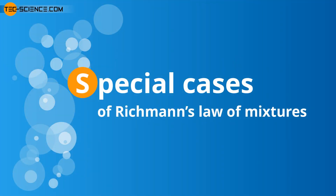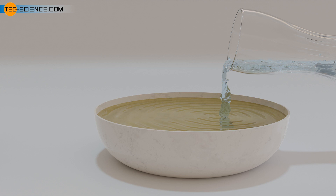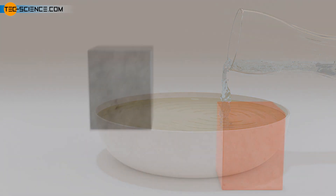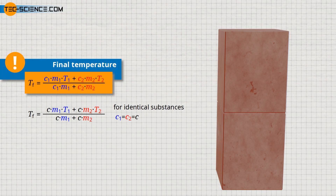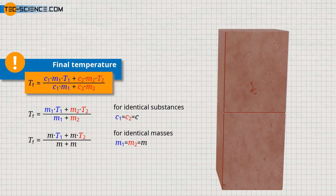Special Cases of Richmond's Law of Mixtures. When mixing two identical substances — for example, when pouring hot water into a cold water bath, or when bringing two steel blocks together — the specific heat capacities are identical, so that the final temperature is ultimately independent of these specific heat capacities and they can be cancelled out in the formula. That means, no matter which substances are brought into thermal contact with each other, as long as they are identical, the final temperature will be the same in all cases. If furthermore the masses of the two objects are equal, the final temperature results from the arithmetic mean of the initial temperatures.